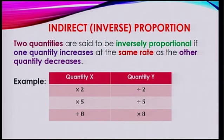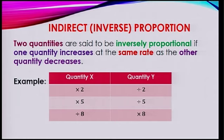When one increases, the other will decrease but they are both at the same rate. When one quantity — suppose quantity x — you are multiplying by 2, to get quantity y, you need to divide it by 2. If you are multiplying by 5 for quantity x, for quantity y you need to divide by 5. And if you are dividing by 8 for quantity x, for quantity y you need to multiply by 8.